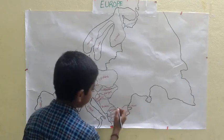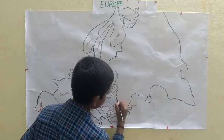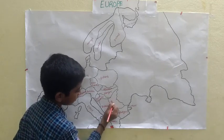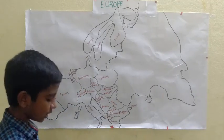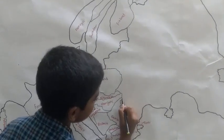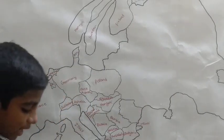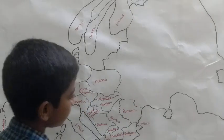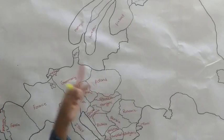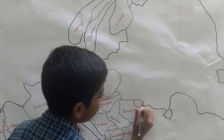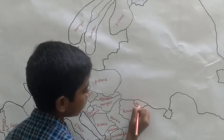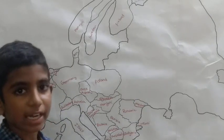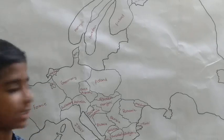Next we go to Serbia, then Romania. A neighboring country of Romania is Moldova. Moldova is one of the former 15 Soviet countries.